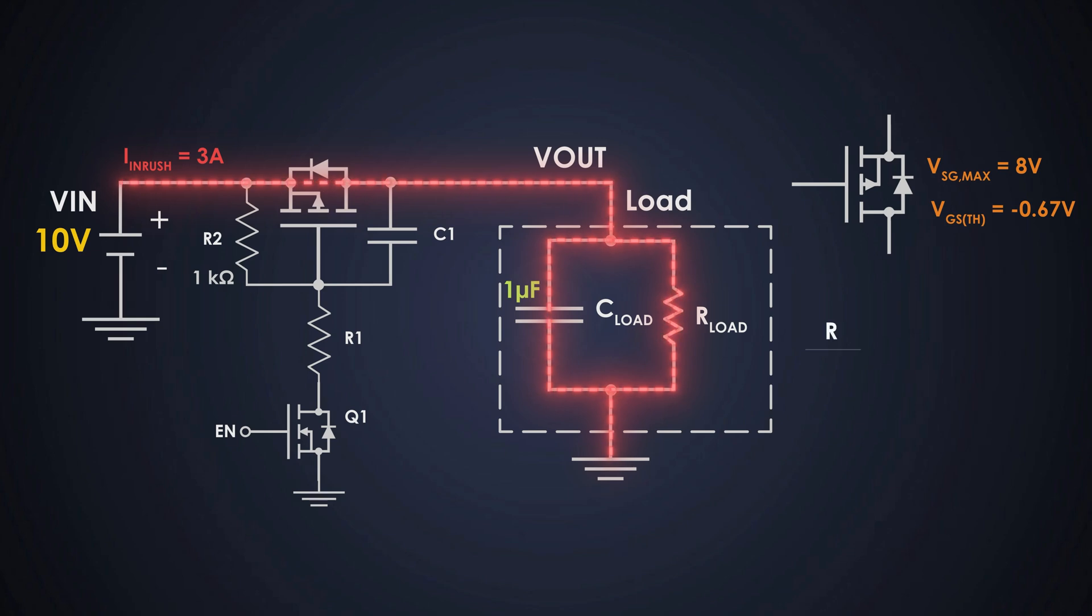First, we pick R2 as 1k. That's our standard pull-up resistor. Now, we calculate R1 using this formula. That gives us R1 is equal to 250 ohms. Next, we calculate capacitor C1. We can use this formula for that.